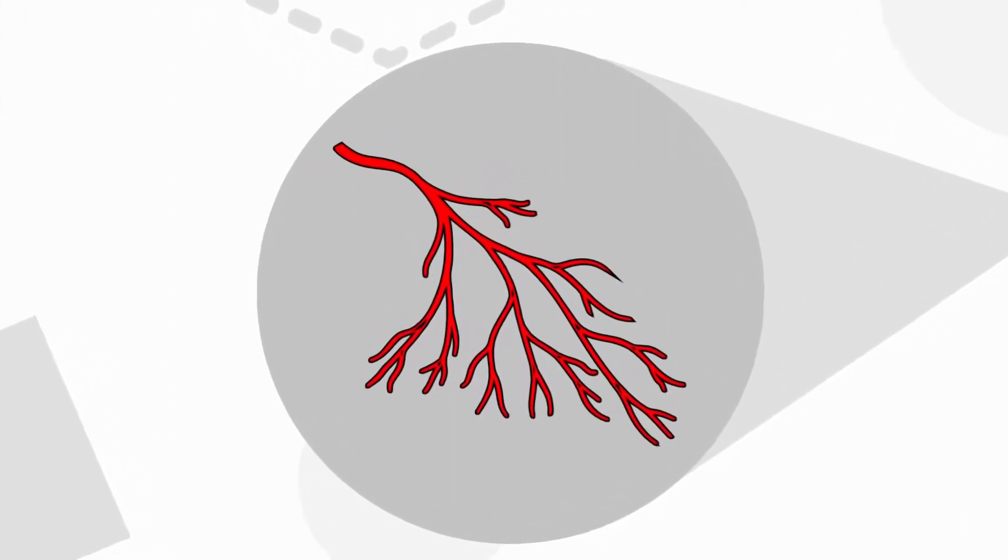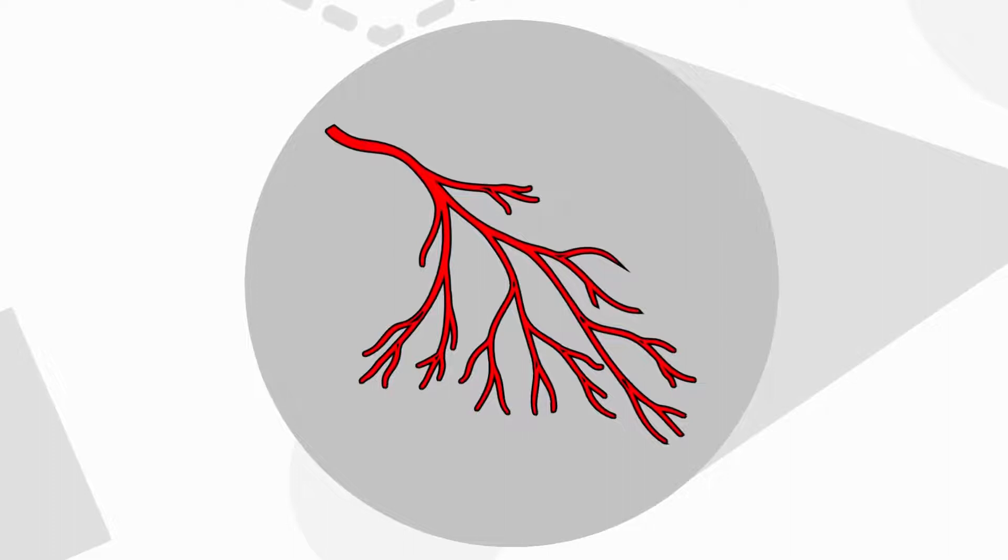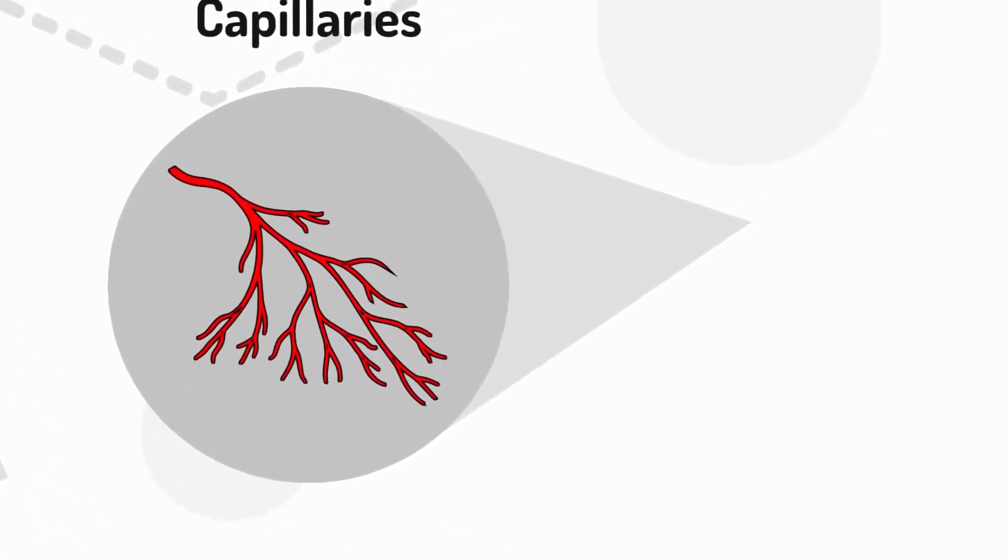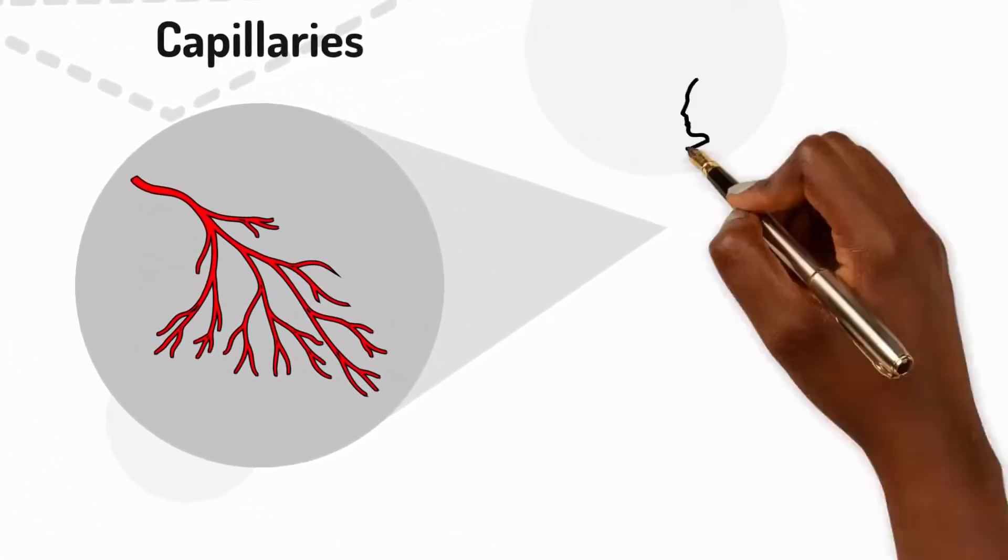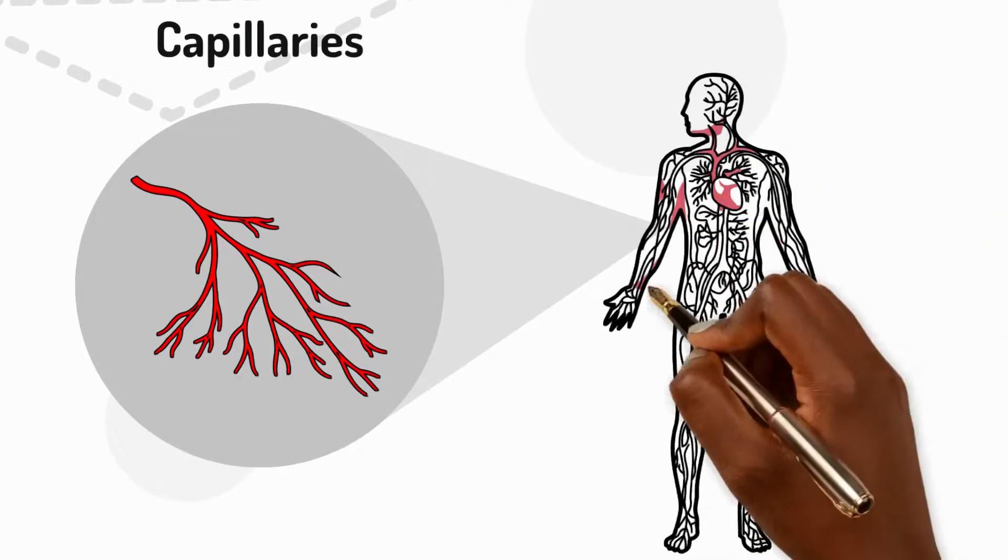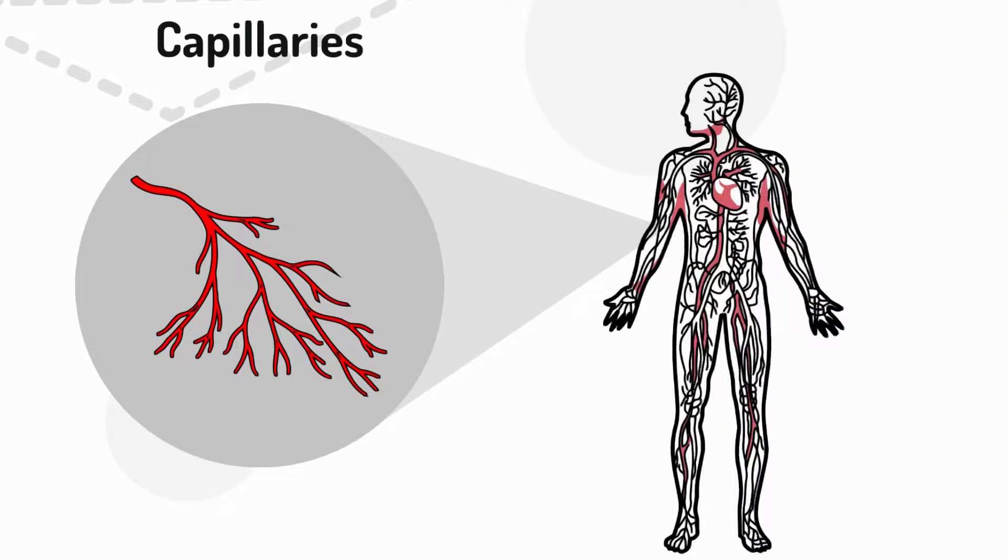Capillaries are too small for us to see, but they can reach the tiniest spaces. It's capillaries that deliver oxygen and nutrients to all our body parts and take away waste.